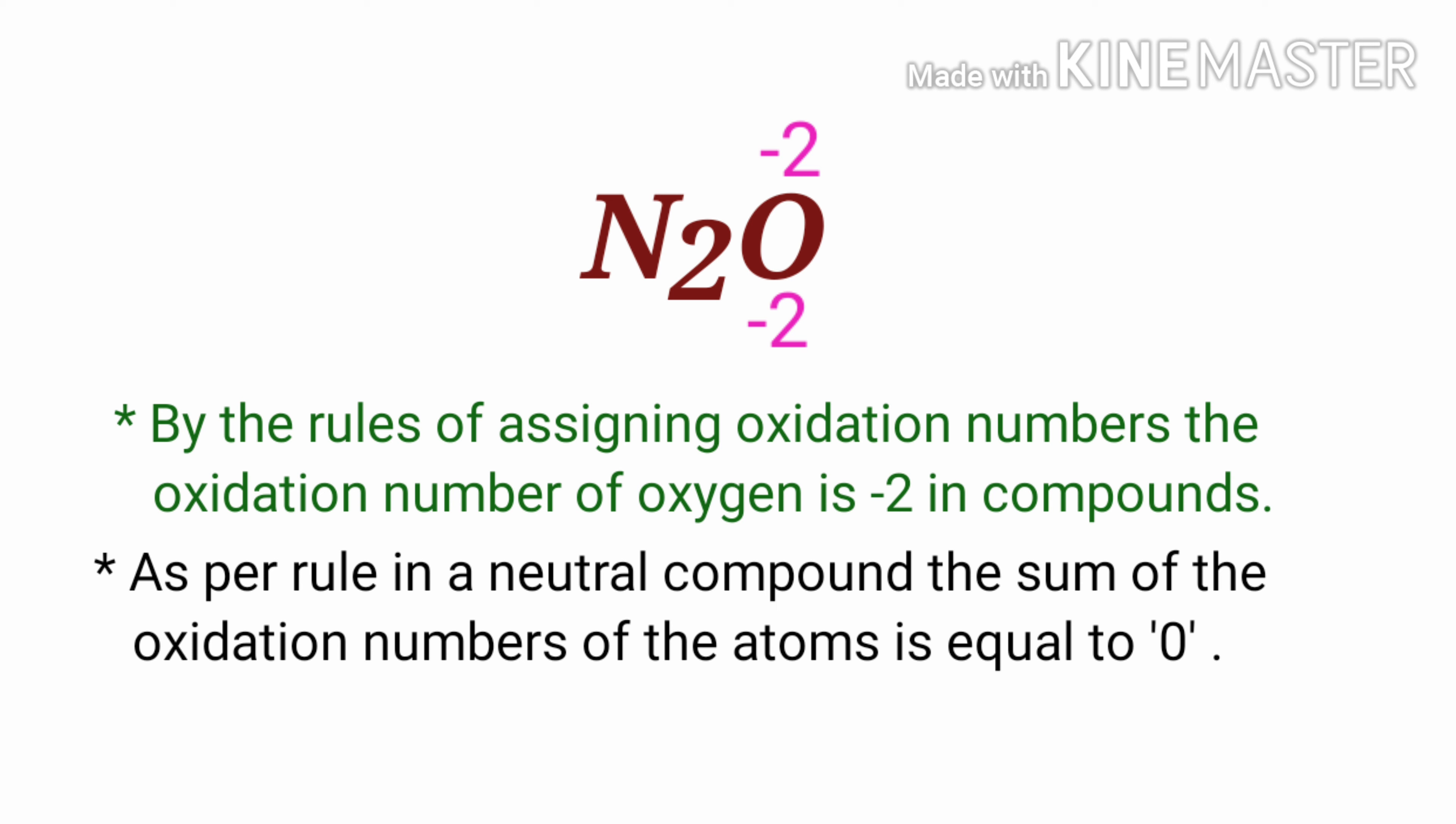As per the rule, in a neutral compound, the sum of the oxidation numbers of the atoms is equal to zero. So the numbers along the bottom must add up to zero. So the number under N₂ must be +2.